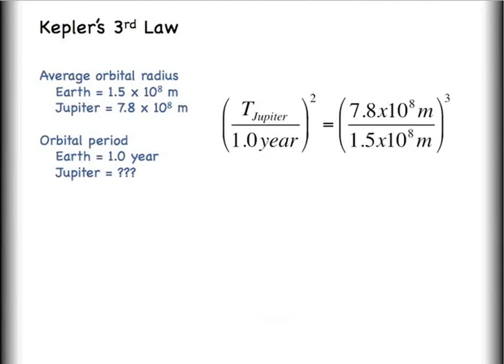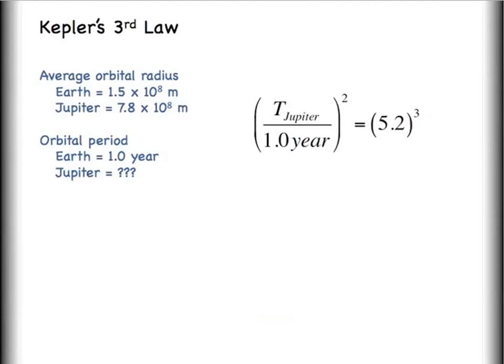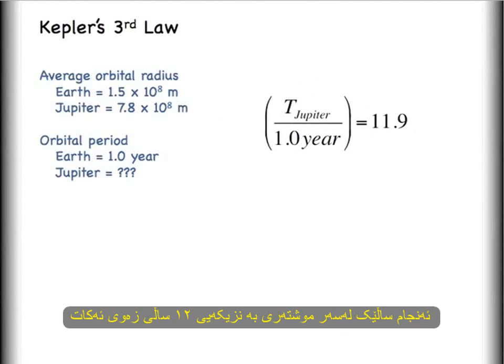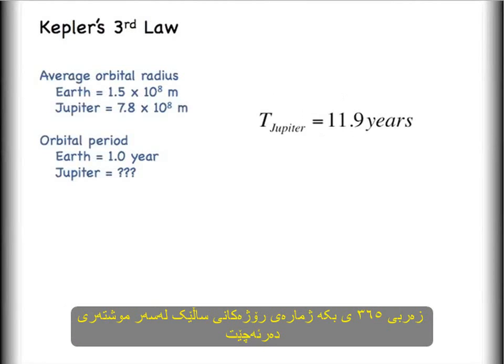I am going to go ahead and plug in my numbers. Notice on the left-hand side, if I simplify this down, I get approximately 100, and then taking the square root of both sides, the result from Jupiter's data is 11.9 years.